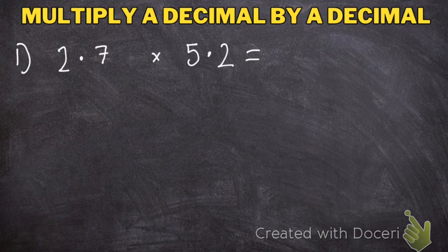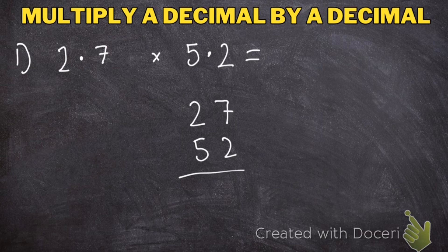We have 2.7 multiplied by 5.2. The key to multiplying decimals is to pretend the decimal point doesn't exist. So I'm going to multiply 27 by 52. I've just taken the decimal points out and I'm pretending they're not there.